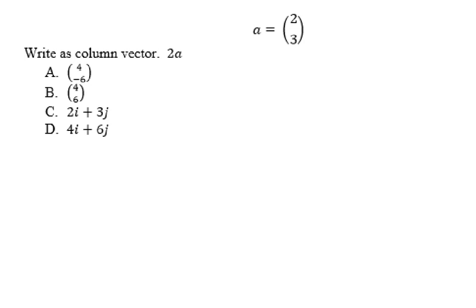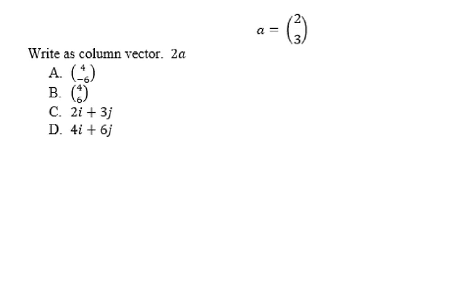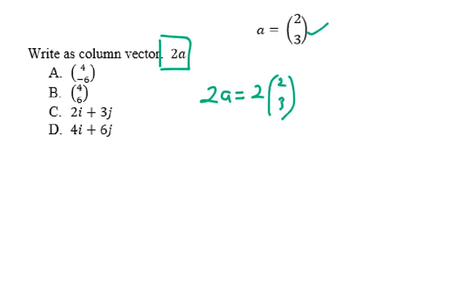For this question, you have to write 2a as the column vector. So this is a column vector — you can clearly see two rows and one column. So for 2a, it will be equal to 2 multiplied with 2 and 3. Hence, what you will be getting is 4 and 6. The answer is b.